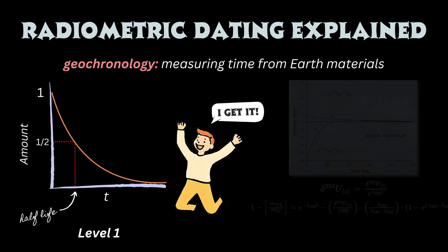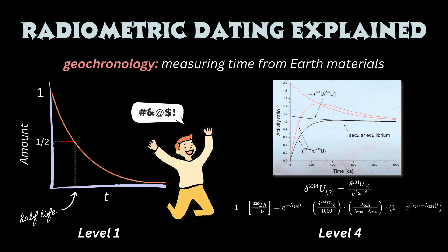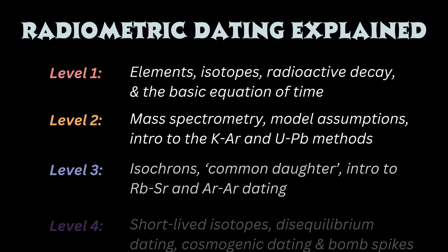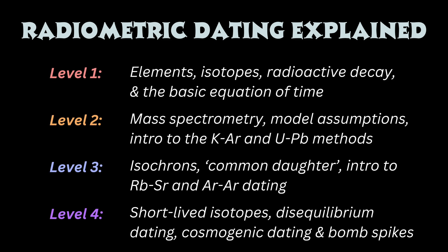But it can explode in complexity once we investigate the full range of techniques, with all their gory mathematical details, and especially as we discuss the natural events in a rock's life cycle that can undermine the accuracy of those results. Therefore, my goal in this series is to present radiometric dating at four levels of difficulty, from high school to grad student, so that you can decide where to begin and end your study, and are guaranteed to learn something new.